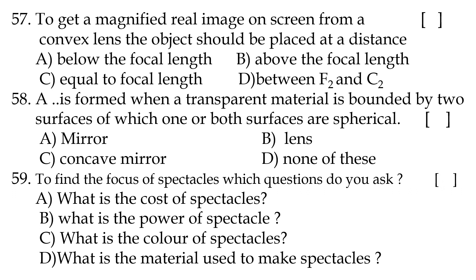Fifty-seventh question: to get a magnified real image on a screen from a convex lens, the object should be placed at option A — between F2 and C2. Fifty-eighth question: a dash is formed when a transparent material is bounded by two surfaces of which one or both are spherical — option B, lens. That is the definition of a lens.